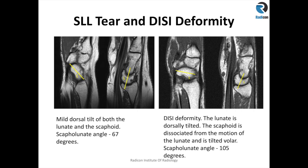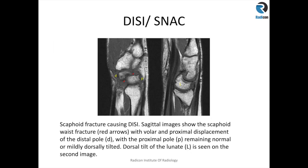We always look at the source or scout images to see how the wrist was scanned and then assess for DISI deformity. On the second image on the right, the scaphoid is tilted quite significantly. Measuring the angle along the long axis of the scaphoid and through the axis of the lunate gives a value well above 80 degrees — in this case 105 degrees — indicating DISI deformity.